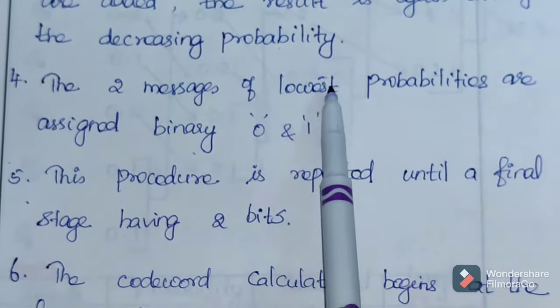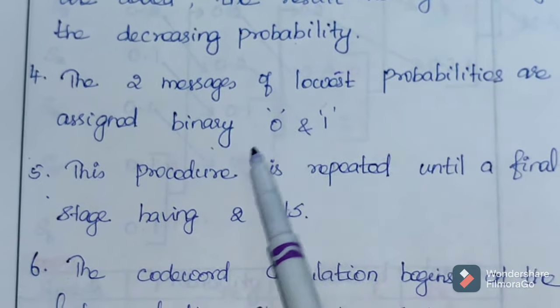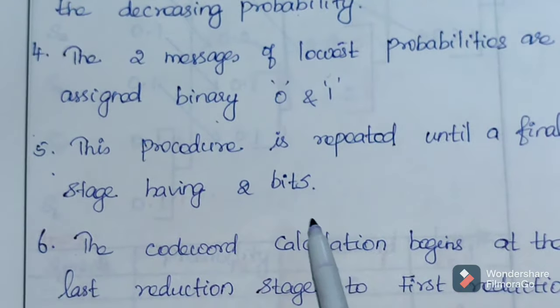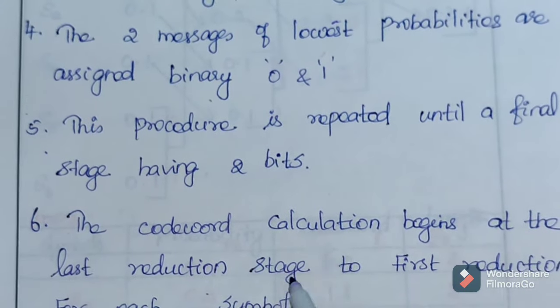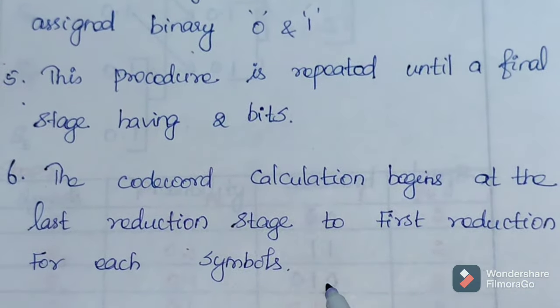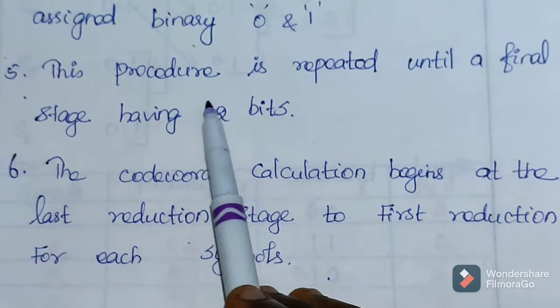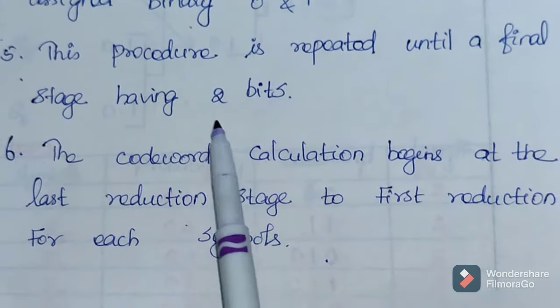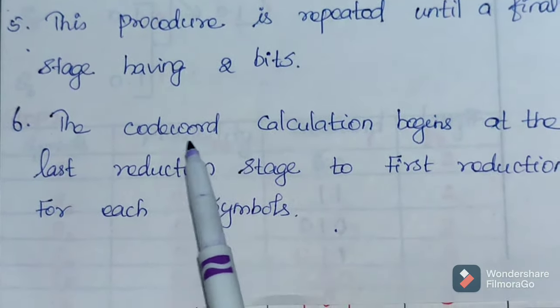Then the two lowest probabilities in stage 1 are added. The added result is again rearranged in decreasing order. This way: add and rearrange in decreasing order again.